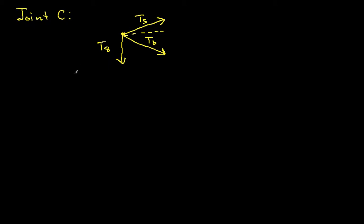So we can sum everything in the x direction, and we get cosine 26.6 degrees times T5 plus cosine 26.6 degrees T6 is equal to 0.